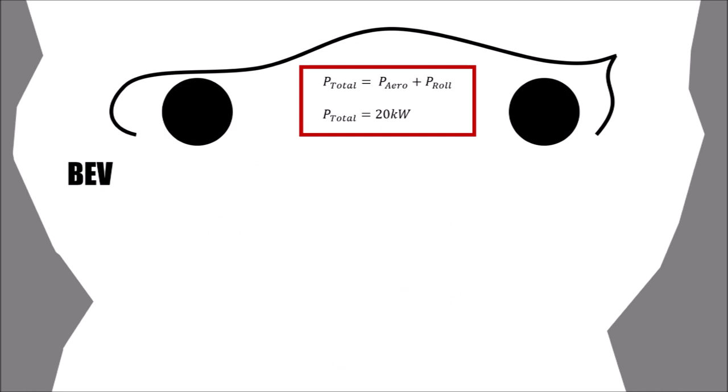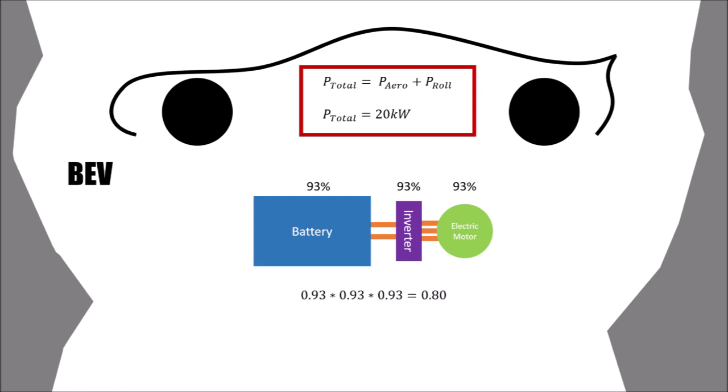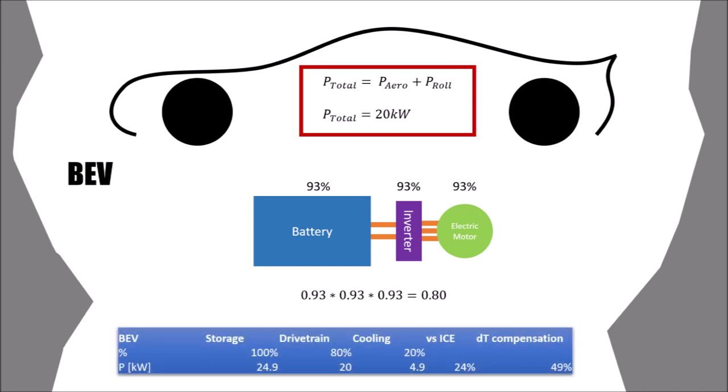Now let's have a look at the electric car. We assume a not too good efficiency of 93% for the energy extraction of the battery, for the inverter, and for the electric motor. Together that means that the overall efficiency is 80% from the battery to the motor shaft. If we need 20 kilowatts to drive the car, we will have to input 25 kilowatts from the battery. 20 kilowatts are used for driving and 5 kilowatts will have to be cooled by the cooling system.